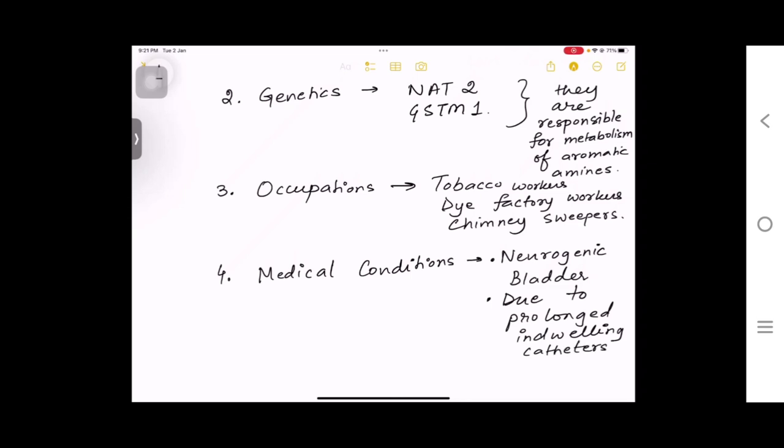Fifth, if there is a congenital bladder anomaly, and sixth if there is schistosomiasis. So bladder cancer - bladder-related conditions will lead to urinary bladder cancer. Next, let's move on to the clinical features.